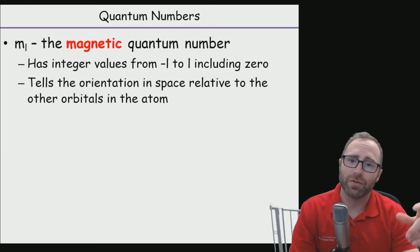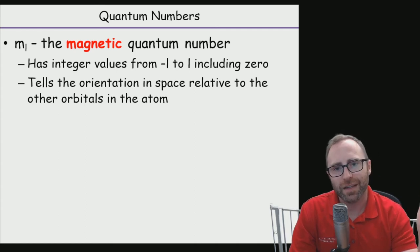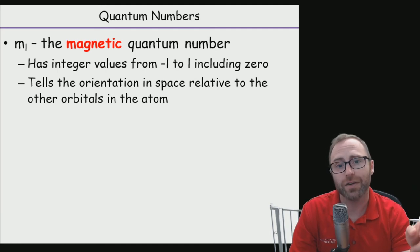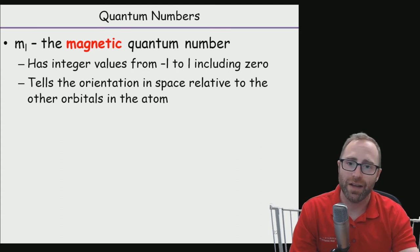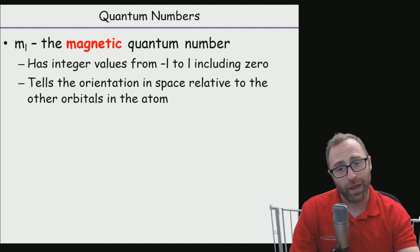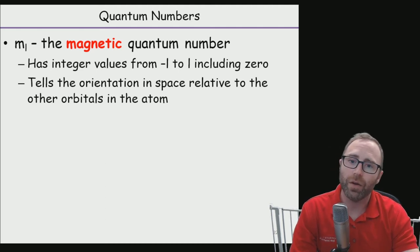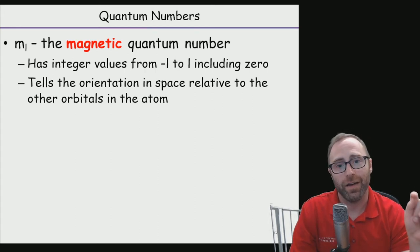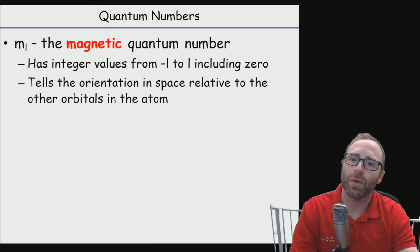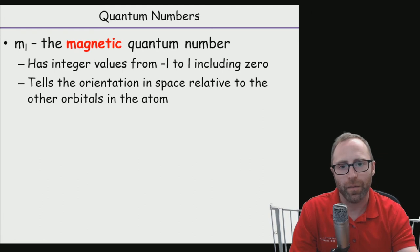The other value that comes from that Schrodinger equation is going to be M sub L, and this is going to be called the magnetic quantum number. It's going to have an integer value that can range from negative L to positive L, including 0. Let's say that we have an example where N is equal to 3 for a specific electron, L is equal to 2. M sub L could have, because L is equal to 2, we could have an M sub L of negative 2, negative 1, 0, 1, or 2. What does the magnetic quantum number tell us? It's going to tell us the orientation in space for our orbitals.